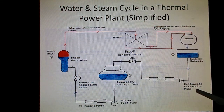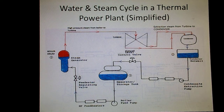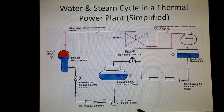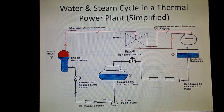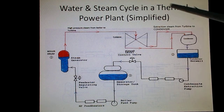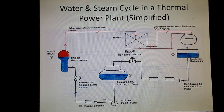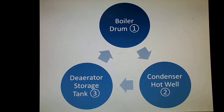The water is stored in the condenser hot well. From the condenser hot well, the condensate extraction pump sends the water to the deaerator storage tank. From the deaerator storage tank, through the boiler feed pump, water is sent back to the boiler drum, completing the cycle.